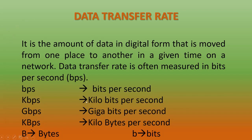BPS means bits per second. KBPS means kilobits per second — here the small letter 'b' represents kilobits per second. If you are using a capital 'B', then that will be kilobytes per second. Data transfer rate is the amount of data that is transferred from one place to another in a given time on a network.